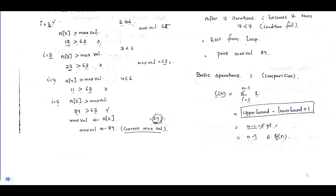In the next iteration, a[2] is 18, and 18 is not greater than 63, so max value remains 63. Then a[3] is 23, which is also not greater than 63, so max value is still 63. Next, a[4] is 11, which is not greater than 63, so again the condition fails and max value remains 63.